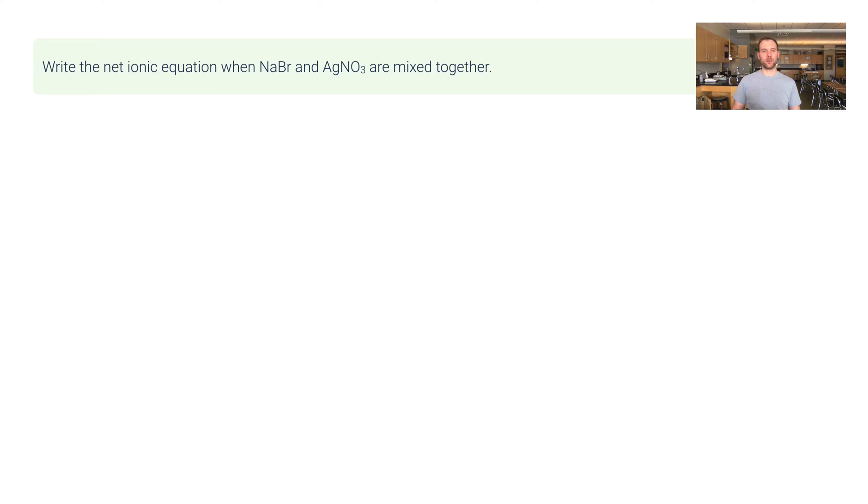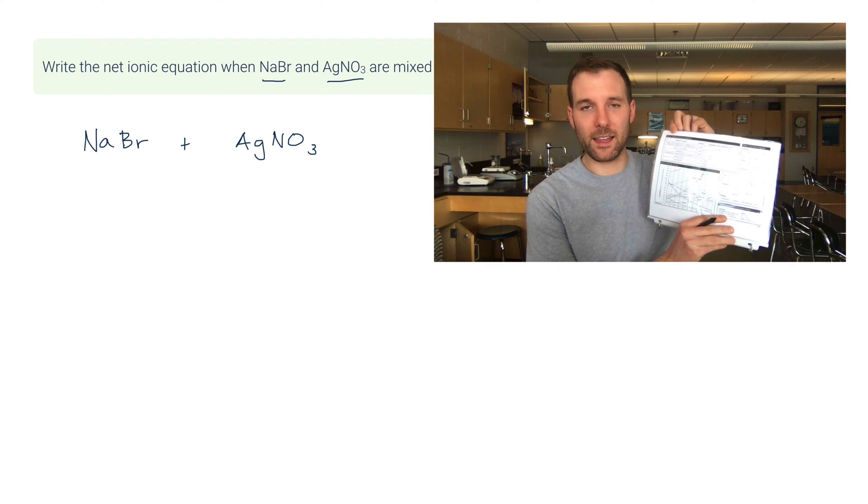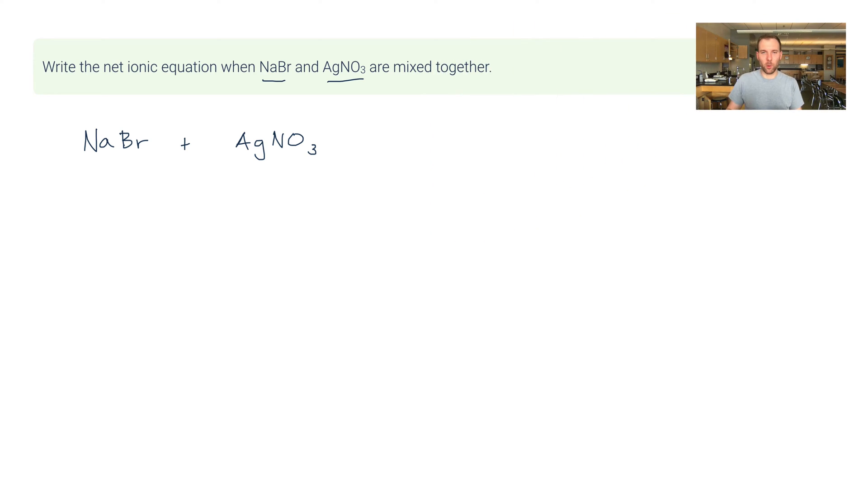So let's do an example problem here. It says write the net ionic equation when NaBr and AgNO3 are mixed together. Watch this step-by-step process. The first step is to write NaBr and AgNO3. The second step is to check their solubility. In order for this kind of reaction to happen they have to both be soluble. So I use table six, the solubility guidelines or solubility rules, and I find that NaBr is soluble. The reason for that is Na is a group one ion. So all group one ion substances are soluble. So here's what I do. I write a little s which means soluble above the formula and I put it in a circle. This is just my own style. You might want to just put a check mark. Whatever is good for you is good for this. And then you want to check the solubility of the other substance. So this is AgNO3. All nitrates are soluble. So AgNO3 is also soluble.